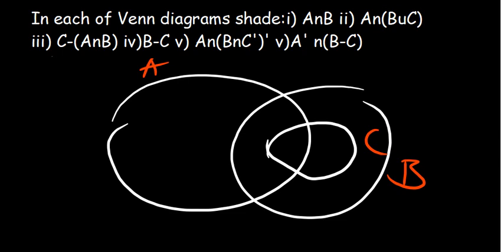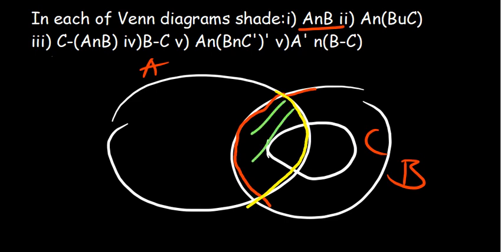The first part requires us to shade the region A intersection B. So what is A intersection B? We're looking at the region that is part of both A and B — the common region. Region B covers this side, region A covers this part, and the region in between is the intersection. That is what you shade.